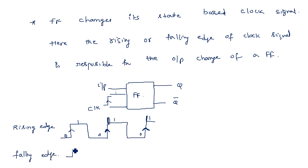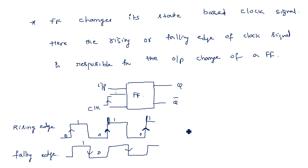Similarly, we also have a falling edge. The falling edge is where the clock changes from logic 1 to logic 0. It is represented with a down arrow — a one-to-zero change. The flip-flop will change its state whenever the falling edge event occurs; only at that particular instant will the inputs affect the output. In all other cases it will not affect the output.